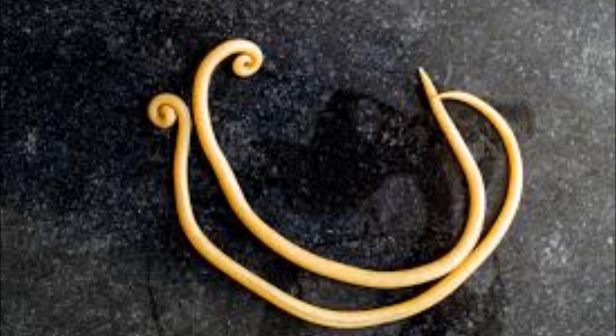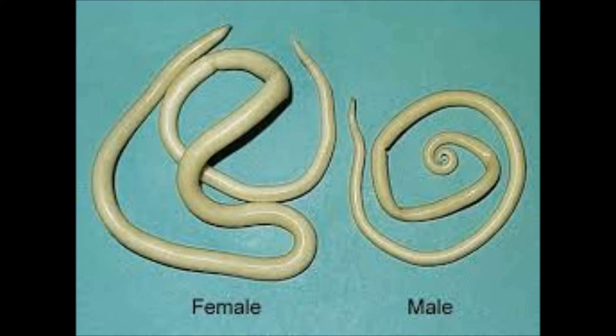Number 3: Ascaris lumbricoides. The disease is ascariasis. It is an endoparasite of the small intestine of human beings and is more common in children. The animal shows sexual dimorphism — the female is longer than the male, and the posterior end of the male is curved ventrally.